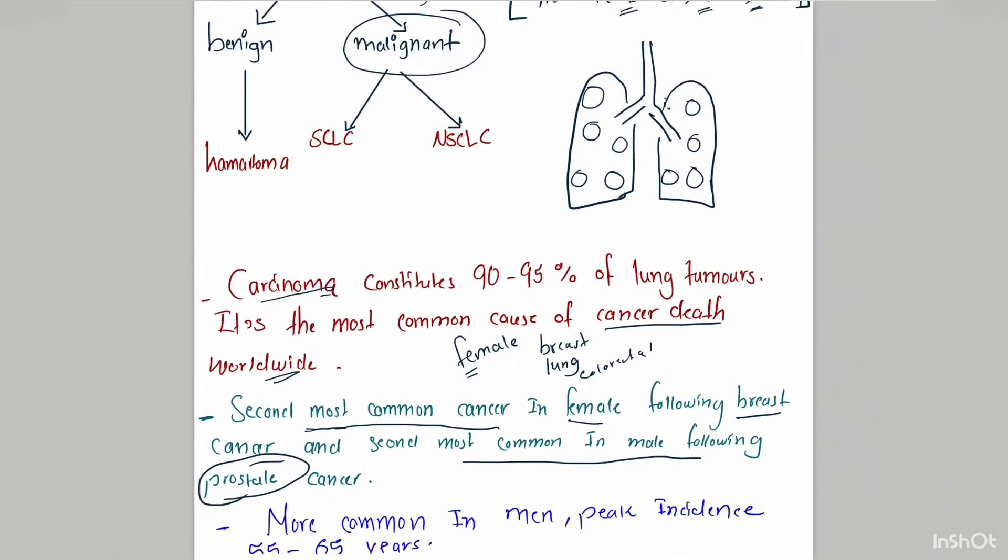Pulmonary carcinomas are more common in men, and the peak incidence is 55 to 65 years. Lung cancer mostly occurs in men.